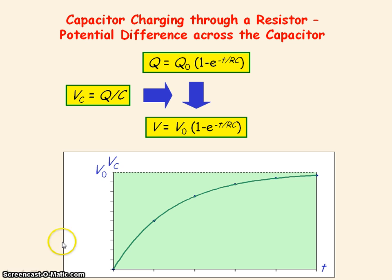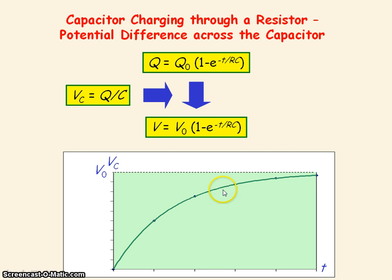This is the graph showing the voltage across the capacitor and how it changes with time t. Again, we see the final voltage on the capacitor will equal V₀ when the capacitor is fully charged.